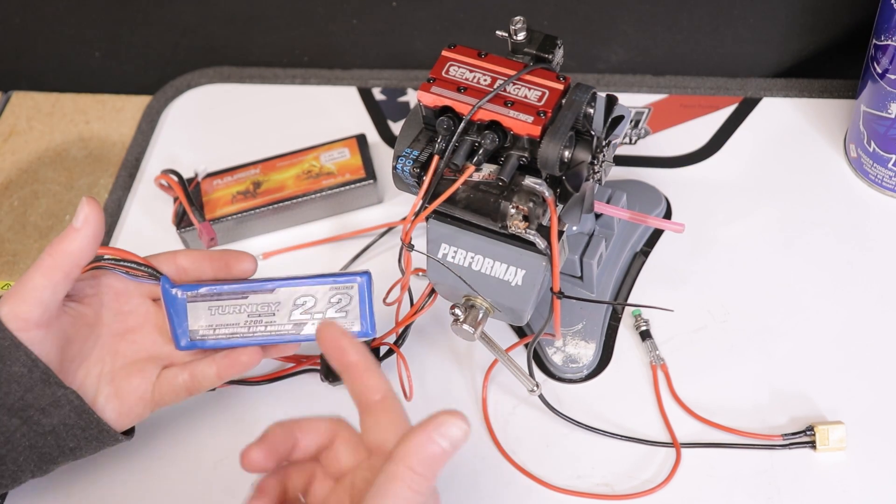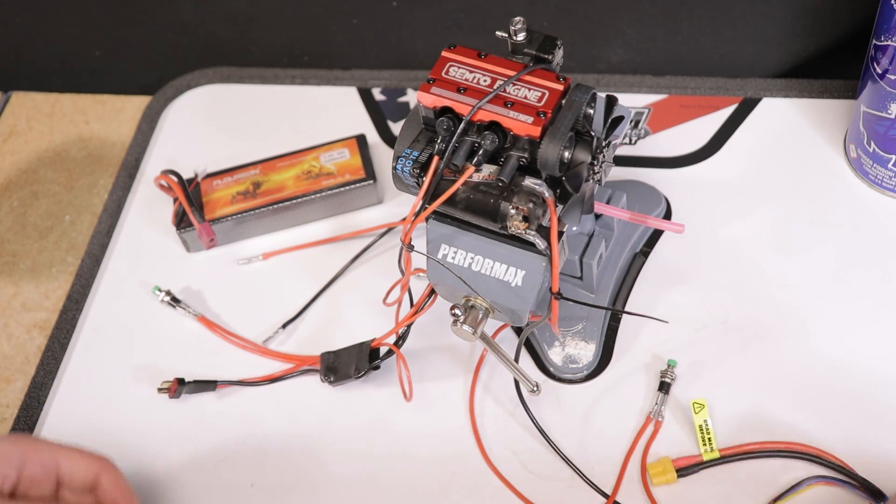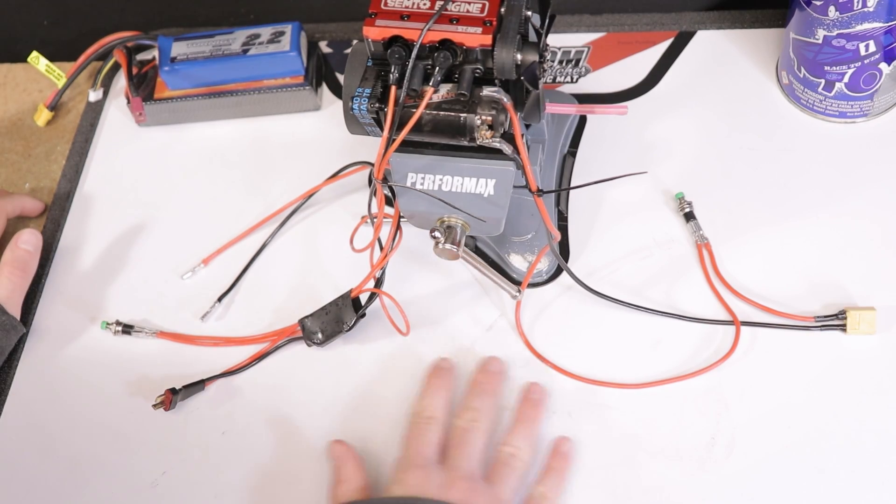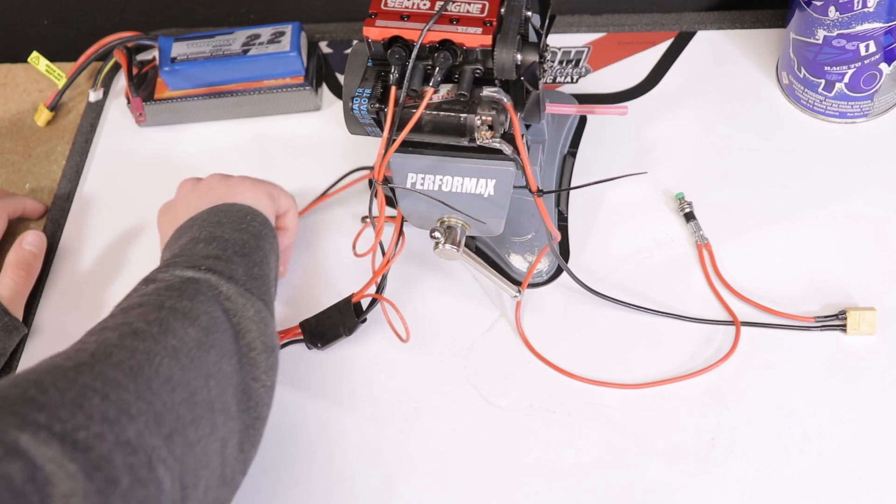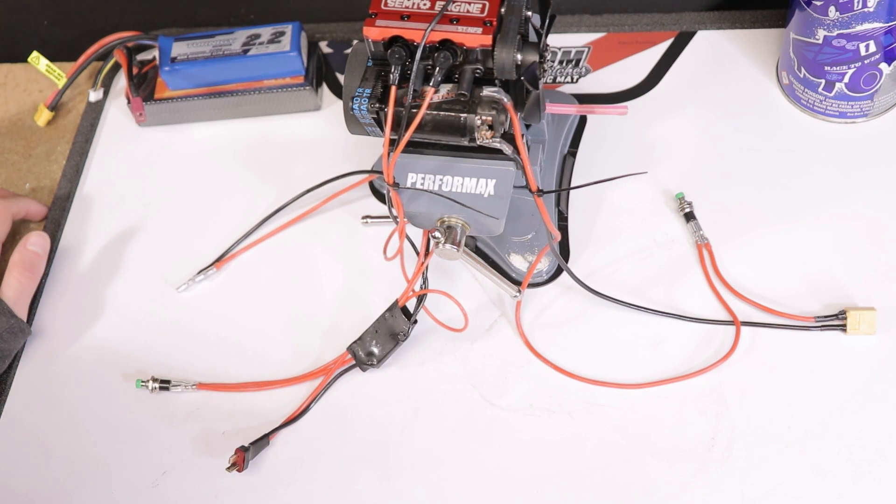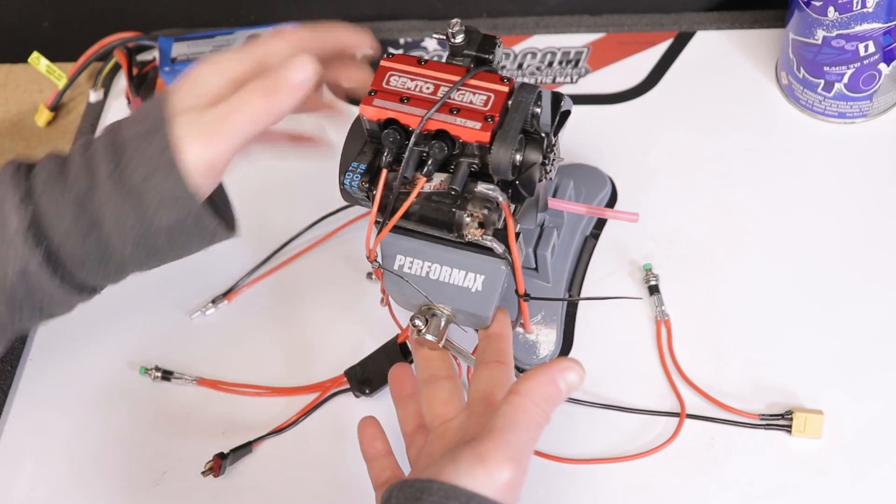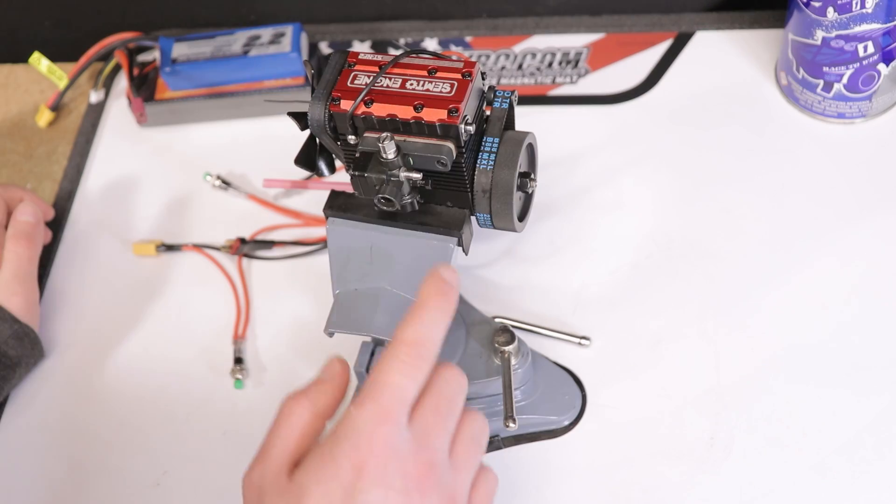So to run the glow plugs I used a 2s lipo. This module steps down the voltage to about 1.3 volts to the glow plugs. And to power the starter motor, to get as much speed as I could out of it, I used a 3s lipo which I plugged in on this side. Again, you don't need to set it up like I did it here. You can just plug these into your starter and use one battery pack. This is just the setup I used to get this thing running.